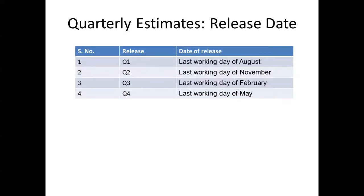Now coming to the Release Calendar of Quarterly Estimates. At the national level, Quarterly Estimates are released with a time-lag of two months. Accordingly, Quarter-1 Estimates comprising the months of April, May, and June are released on the last working day of August.